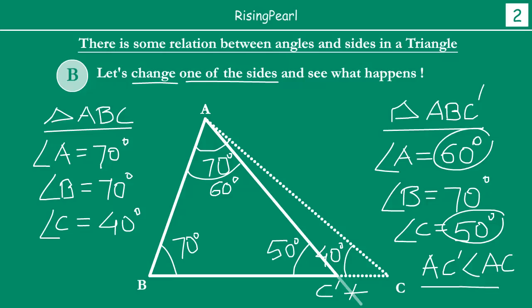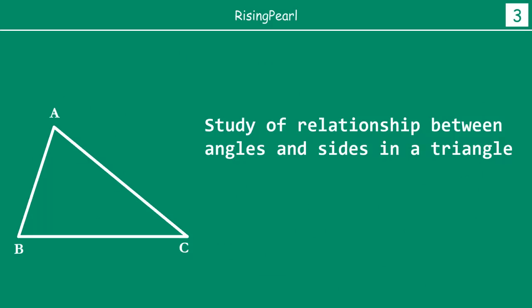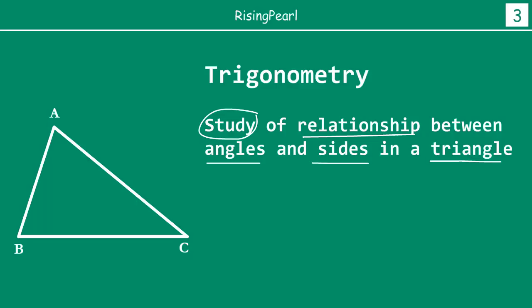The point we are trying to make is this: there is clearly a relationship between angles and sides in a triangle. The branch of mathematics that deals with the study of these relationships between angles and sides in a triangle is called trigonometry. This study connects the angles to the sides — expressing relationships between angles and their sides — is called trigonometry.